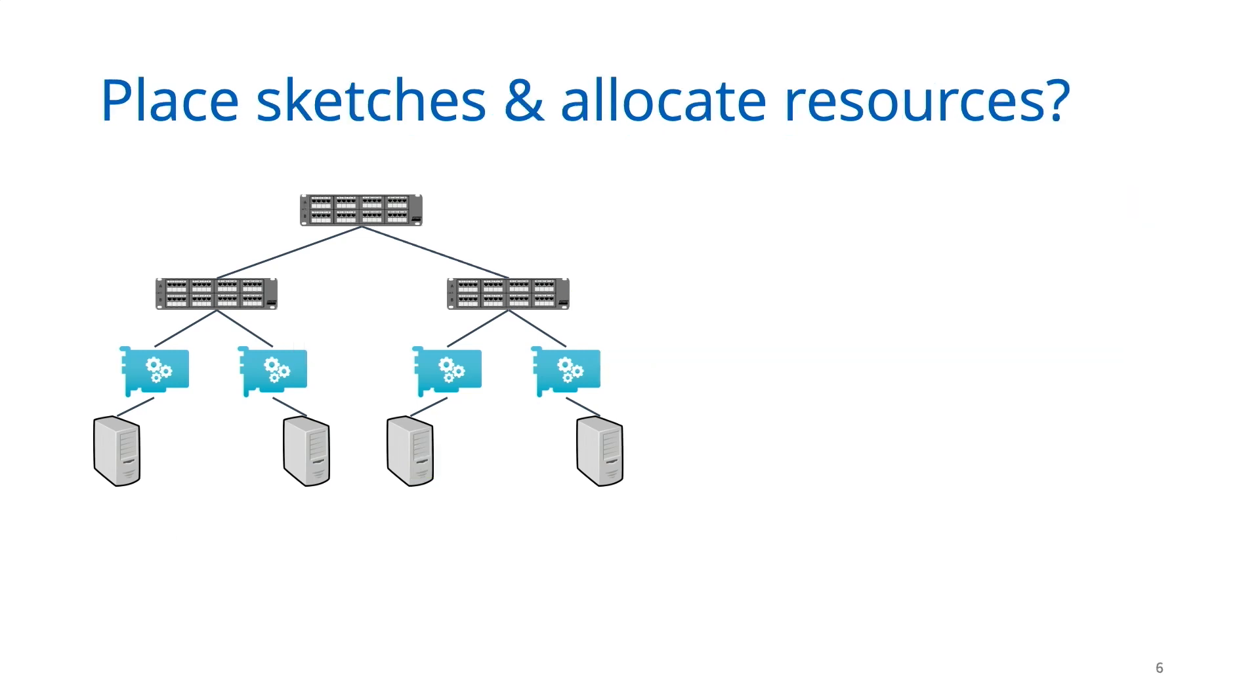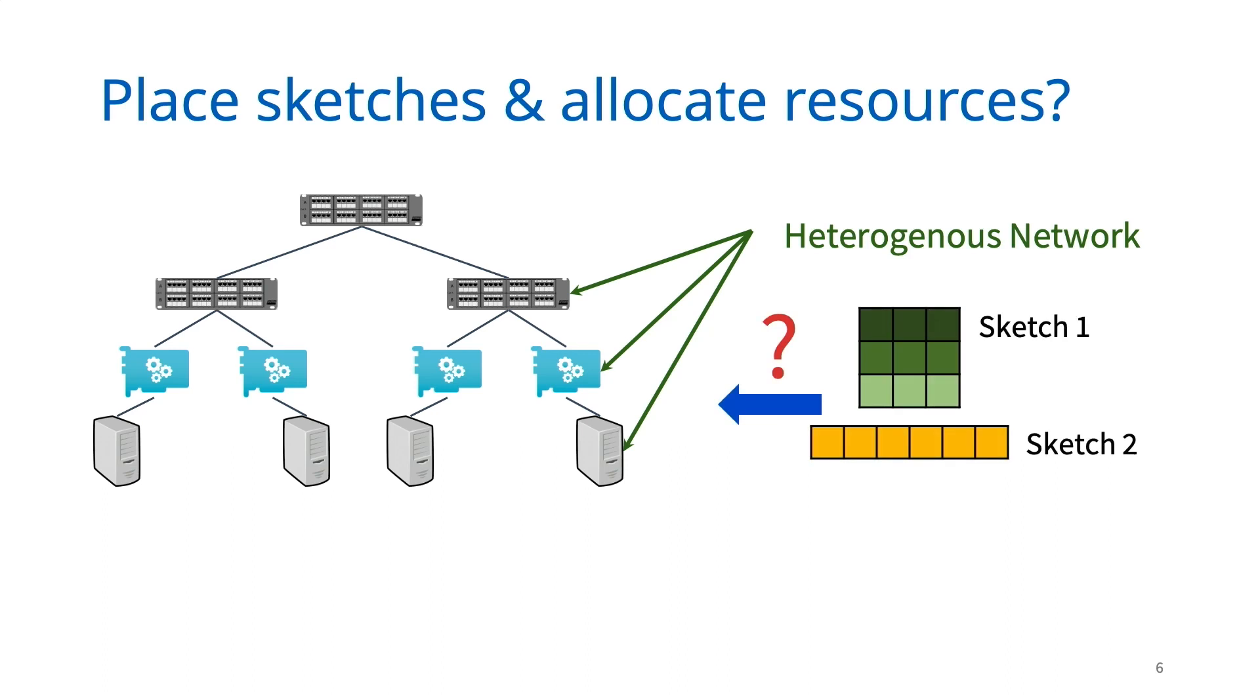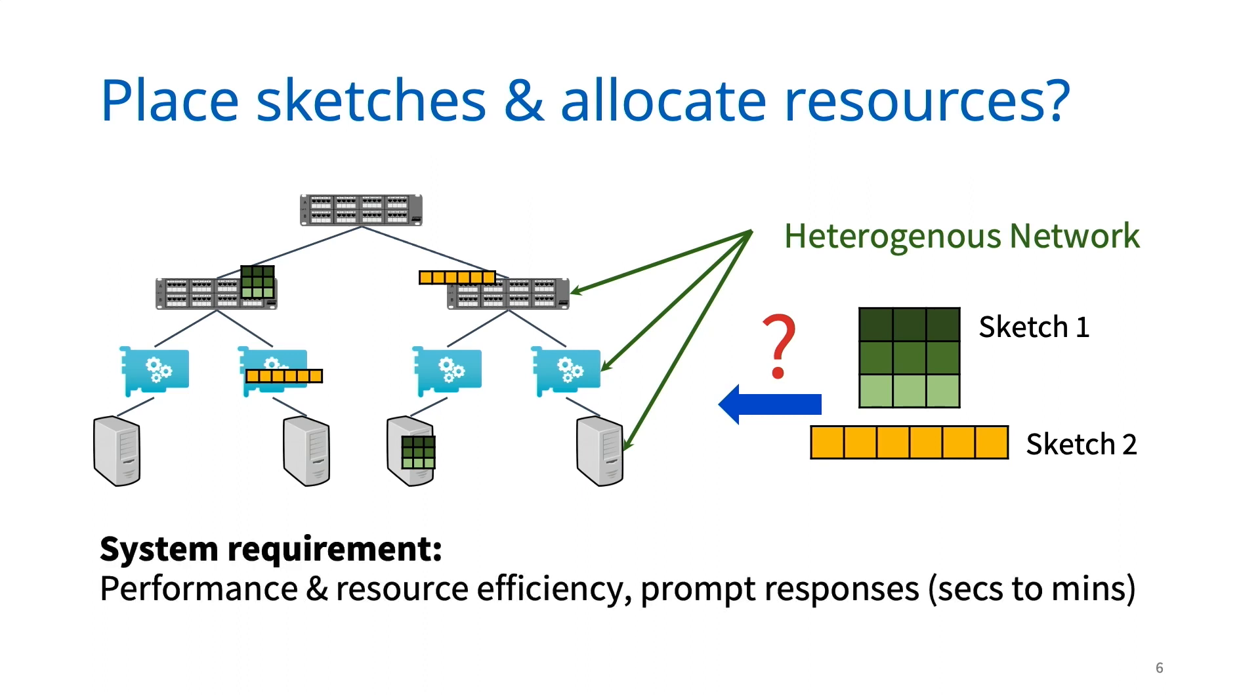So in this work, we ask, how can we best place sketches and allocate resources for monitoring tasks? We consider a heterogeneous network where potentially multiple users may submit diverse sketch-based monitoring intents. With this information, we'd want to place sketches or deploy sketches while minimizing the performance and resource overheads associated with monitoring. And also, we'd like to be able to recompute our deployment decisions to keep up with changes in routing, traffic volumes, and monitoring requirements.